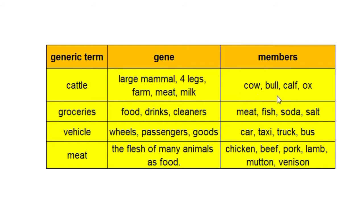The members of the cattle family are: cow — the mom, bull — the dad, calf — the baby, and we also have an ox, which is another story. Now have a look at these words — groceries, vehicle, and meat — and see if you can understand how to identify these groups or families.